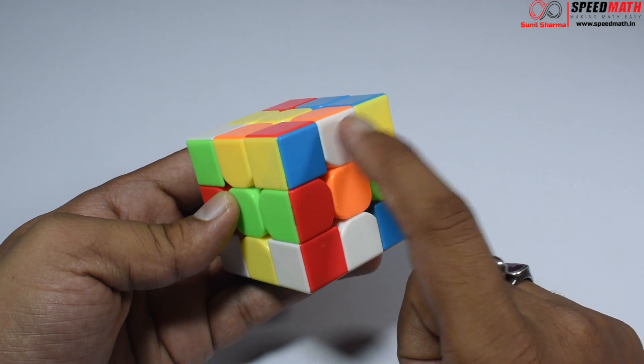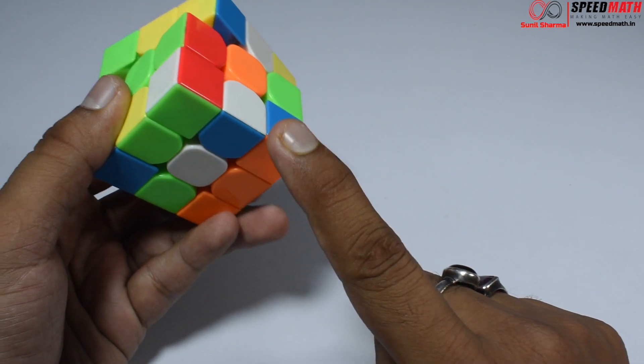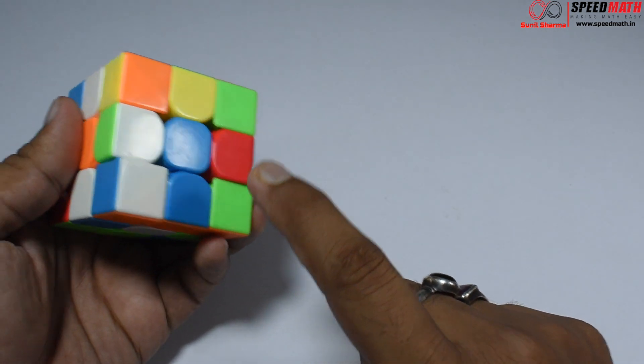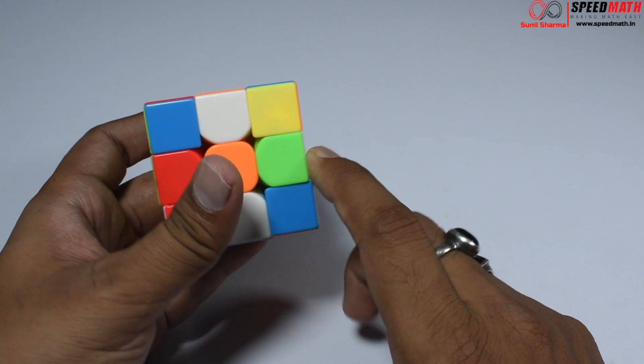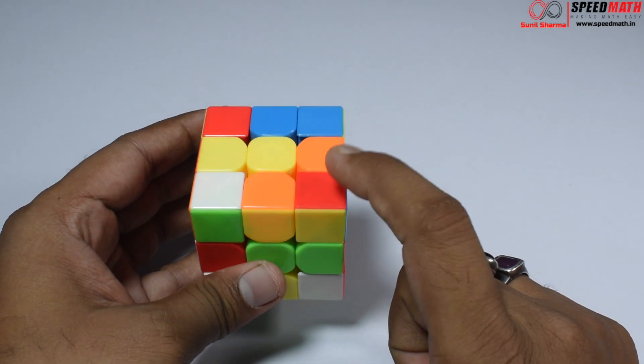Look at this: we have one in the top layer, second in the middle layer, third here, and the fourth is also in the second layer.